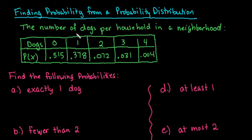We're given the number of dogs per household in a neighborhood. The number of dogs ranged from zero dogs up to four dogs, and the probability of that specific random variable or number of dogs is listed below it. For example, 51.5% of the neighborhood had zero dogs, and 37.8% had one dog.